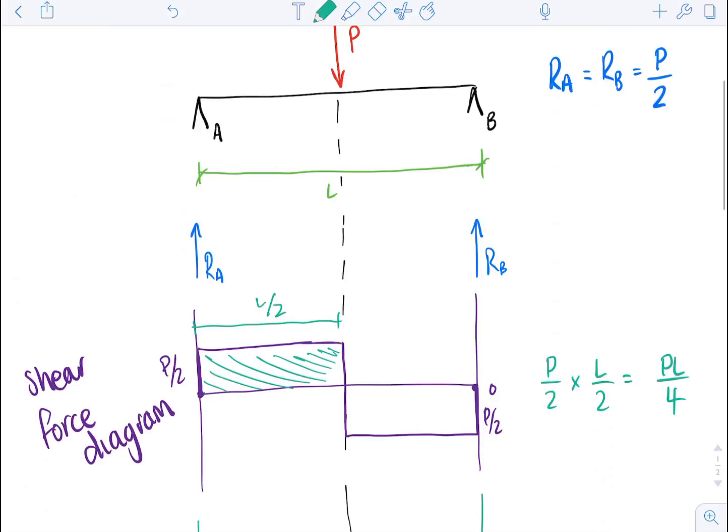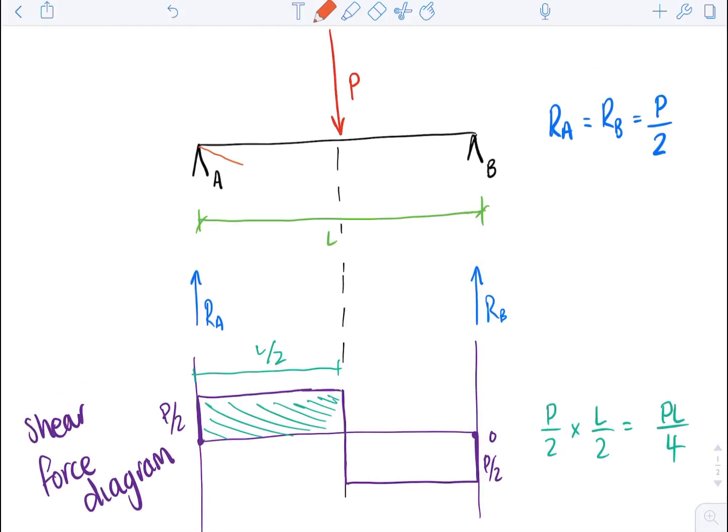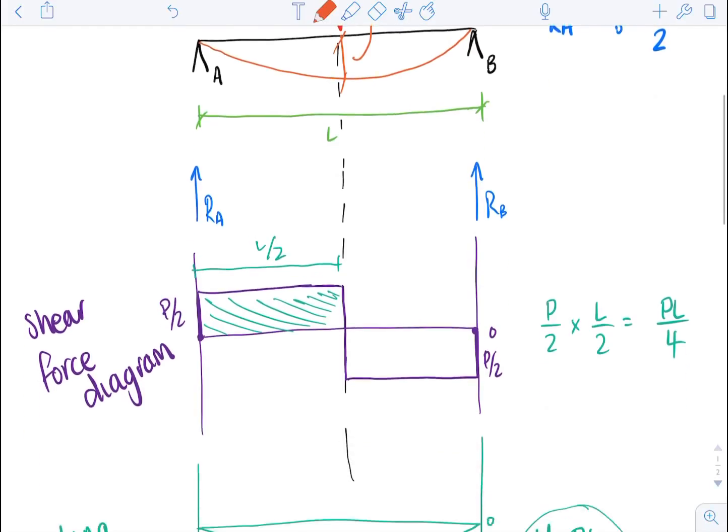And the last thing that you normally have to consider is the deflection. So in this beam, we're going to have a deflected shape that looks something like that. And your maximum point deflection is going to be where your force is acting in the middle, here, in this particular case. So we'll call that delta in the middle.